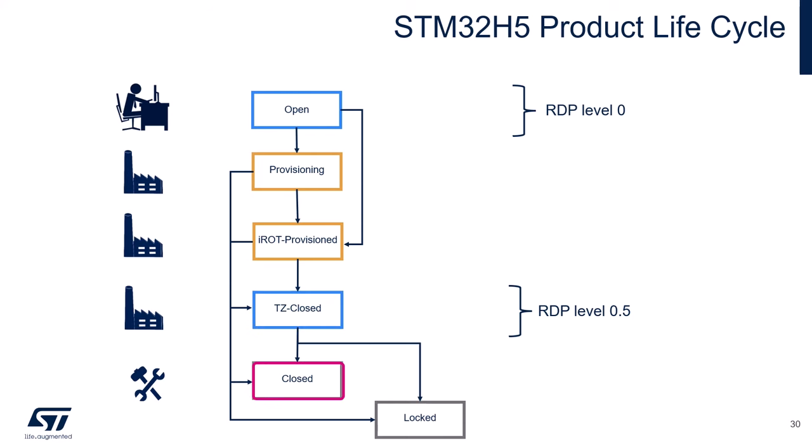Then we have the closed state: no debug access for either secure or non-secure — equivalent to the key-protected RDP level 2. And finally, the locked state: this state is permanent, debug is permanently disabled, and debug reopening or regression is not possible anymore — equivalent to RDP level 2.